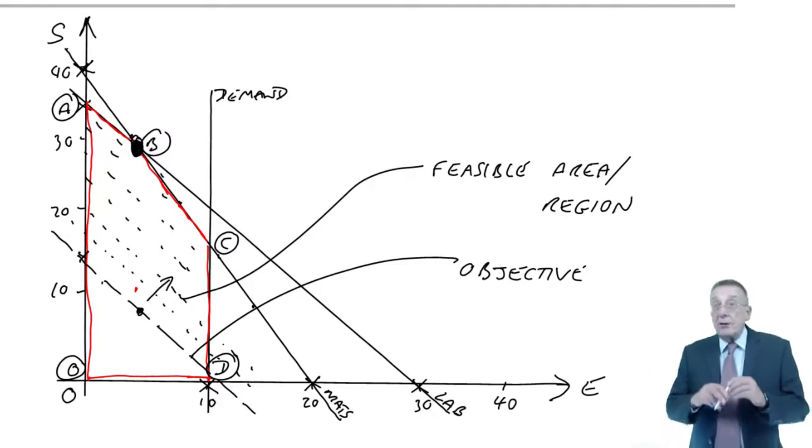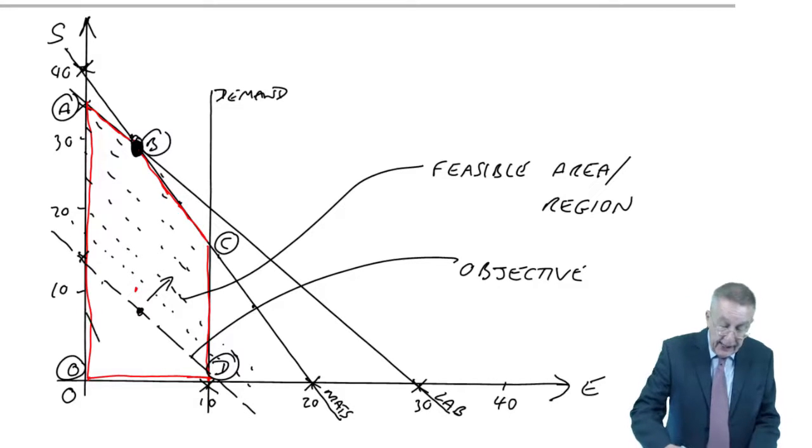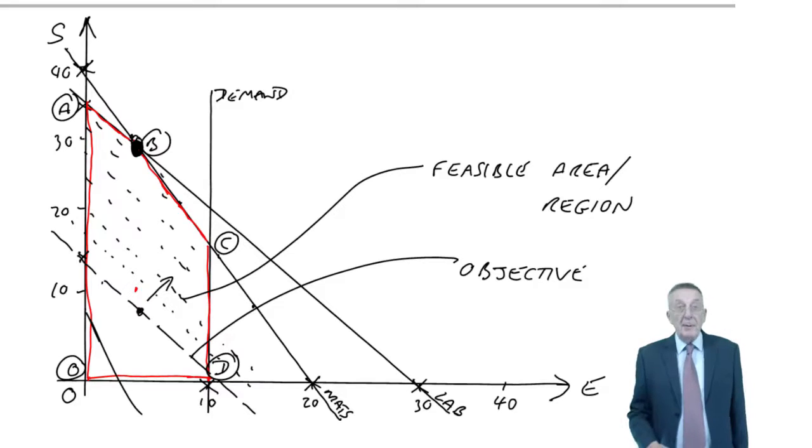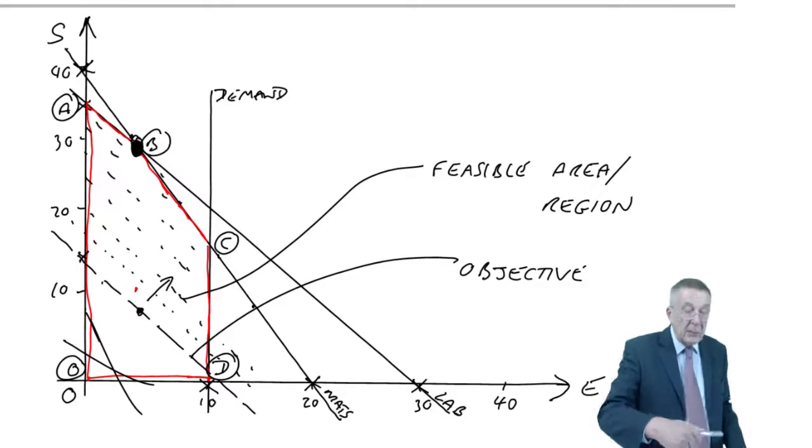Now, which point it is depends, obviously, on the angle of the line. If the angle of the line was like this, move it away, the furthest point away is point C. If the angle of the line was like this, maybe the furthest point away is point A. It could be any of them.